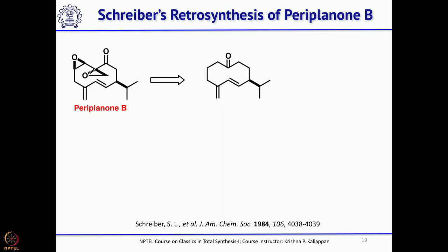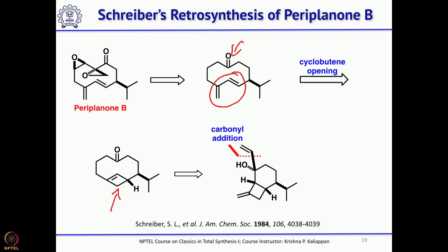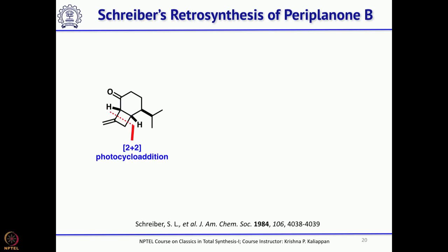His idea was that both epoxides can be introduced starting from this ketone. He wanted to use electrocyclic ring opening to get the diene — specifically, electrocyclic ring opening of a cyclobutene would give the diene, and that can be obtained by anionic oxy-Cope rearrangement. This bicyclic ketone can be obtained from a commercially available natural product with allene through a 2+2 cycloaddition reaction.